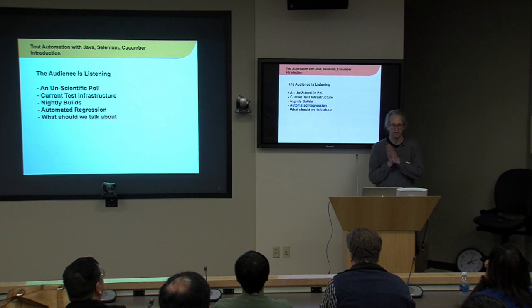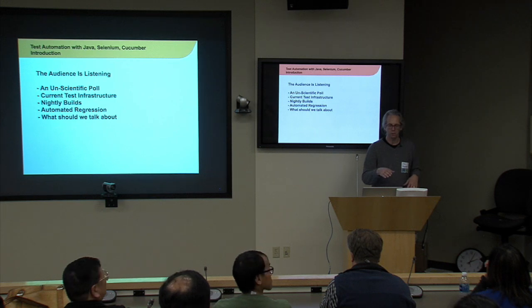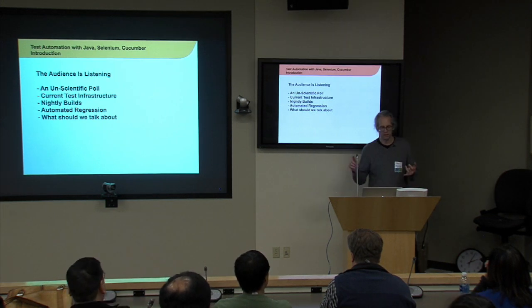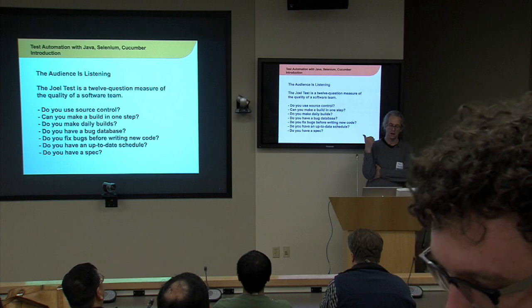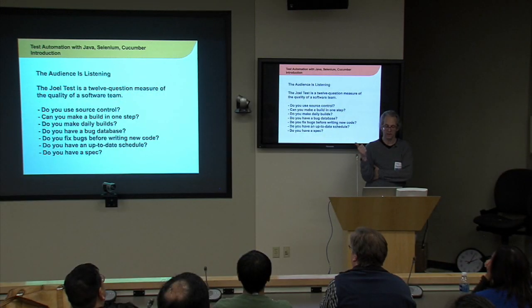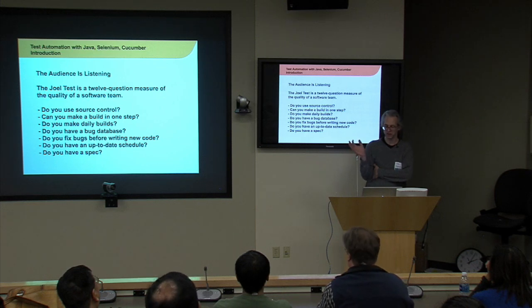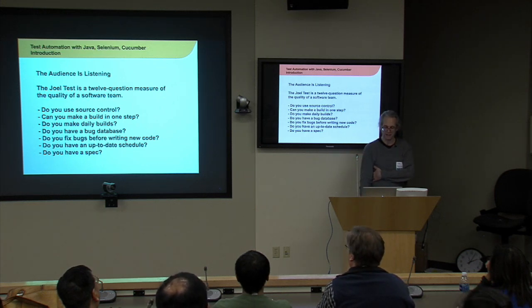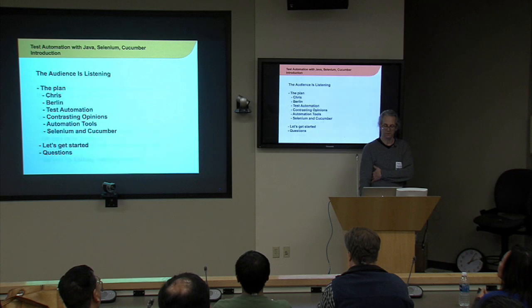One thing to think about is that software automation is really to improve the quality of your product. Some things people talk about: what's your current test infrastructure? Are you doing nightly builds? Automated regression, which is what we're going to talk about today. Do you have good source control? Are you able to build easily? Are you doing daily or nightly builds? Do you keep track of your bugs in something like Jira? Do you have specifications for your software?